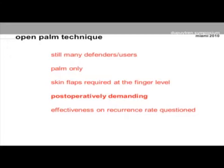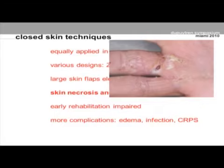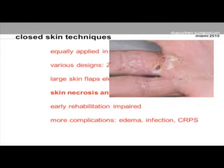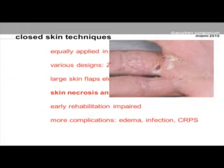Regarding closed skin techniques, they are equally applied in primary cases, and I prefer closed skin techniques. They recur to various designs — Z or V-Y plasties, or zigzag incisions. Whatever the technique, usually large skin flaps are elevated, leading to skin necrosis and delayed healing. For example, three weeks postoperatively, a small spot of necrosis right on the nerve, requiring dressing and being bothersome for the patient. This may also impair early rehabilitation, leading to more complications: edema, infection, and algodystrophy.